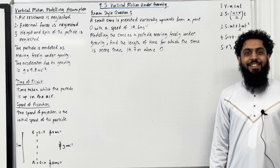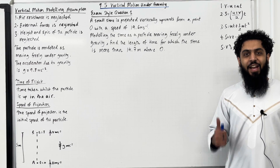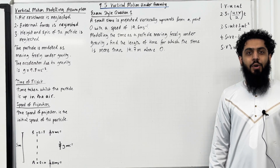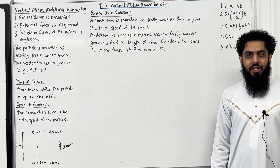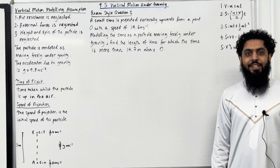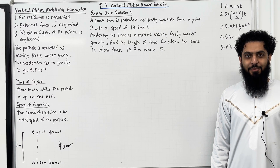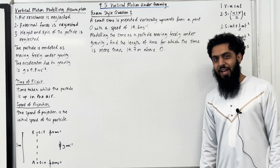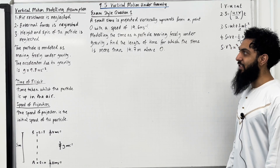Welcome back. In this teaching video, I'll be looking at 9.5 vertical motion under gravity. 9.5 represents Chapter 9, Section 5 of the Pearson A-Level Mechanics Textbook. Let's have a look at the key facts of this section.